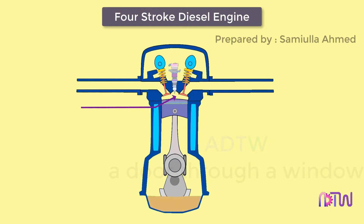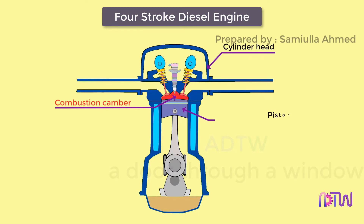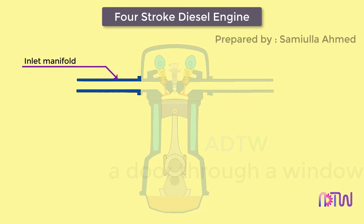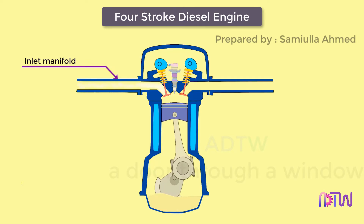The combustion chamber is the space enclosed in the upper part of the cylinder by the cylinder head and the piston top during the combustion process. The inlet manifold is the pipe that connects the intake system to the inlet valve of the engine, through which air is drawn into the cylinder.